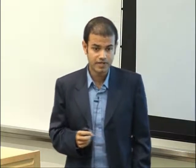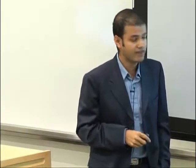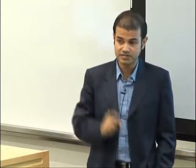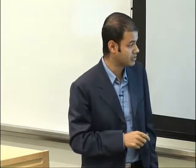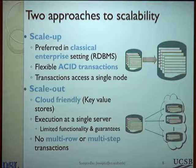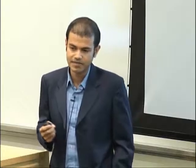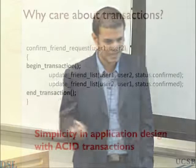In order to ensure scalability and the property that transactions execute at a single node, key-value stores have limited the functionality and guarantees supported. For this talk, I'll focus on the aspect that these key-value stores do not provide support for multi-row or multi-step transactions. Why is transactions a big deal? Many of us already know that, but just to put you in context — why actually care about transactions? If you think of a very simple application like a social network, and there is a friend request that is accepted, this results in updating the friend lists of the two individual users.